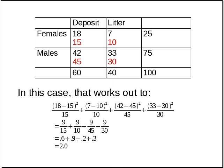In this case, it works out to: (18 minus 15)² divided by 15, plus (7 minus 10)² divided by 10, plus (42 minus 45)² divided by 45, plus (33 minus 30)² divided by 30. If we add all those up, we get a total of 2.0 for chi-squared.